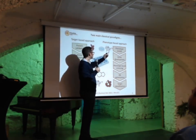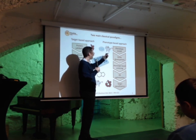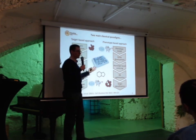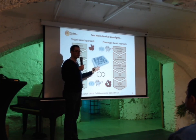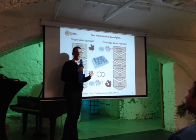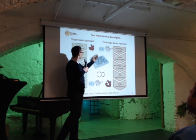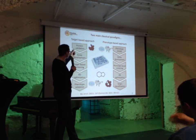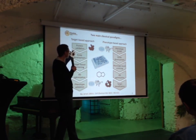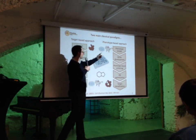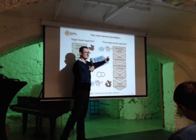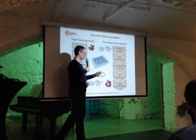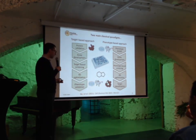The phenotypic approach also has pros and cons. One of the problems is that a big animal like a mouse has a lot less throughput than using a target-based approach, where you can screen tens of thousands to hundreds of thousands of compounds. Nobody has a hundred thousand mice available.